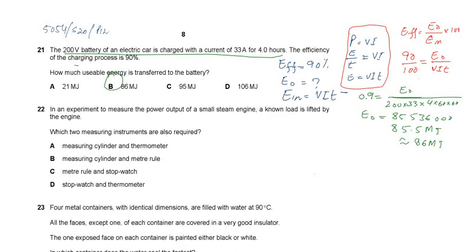And energy input is VIT. What is VIT? How did it come from? Very simple. Power equals V times I. Energy upon time is power. So energy upon time equals VI, and energy equals VIT.